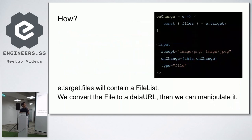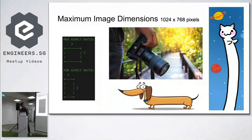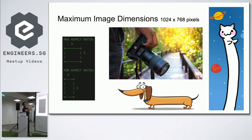So this is how we do it at Carousel. Very basic stuff — you do the regular image input tag and then an onChange. What you get is a file list, which you can turn to a data URL. Our limits are 1024 by 768, and we need a max and minimum aspect ratio — 2:3 and 3:2. So you see the tall cat, you see the long dog — those should be center cropped.